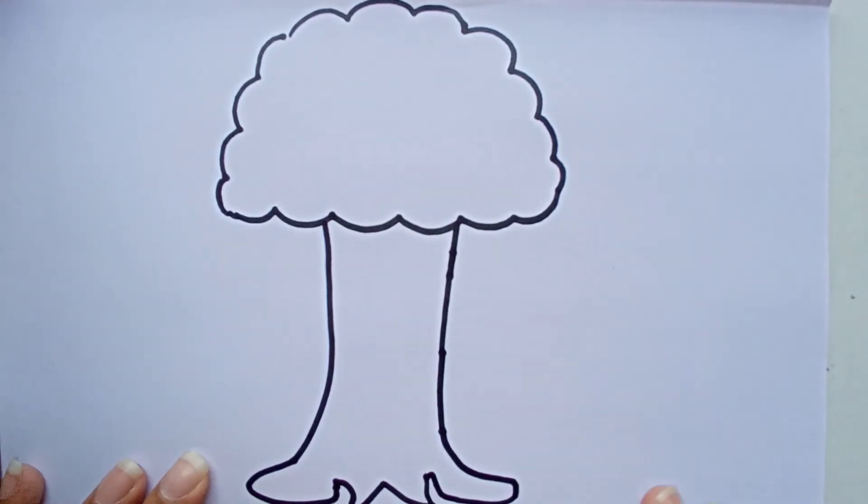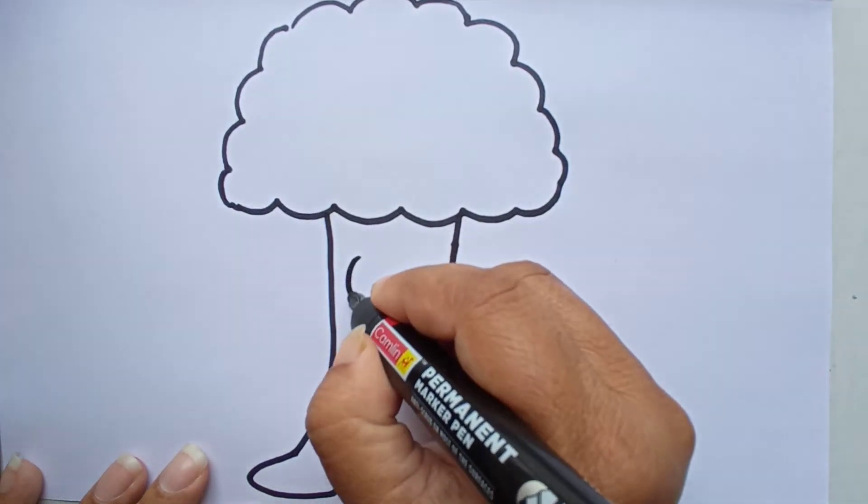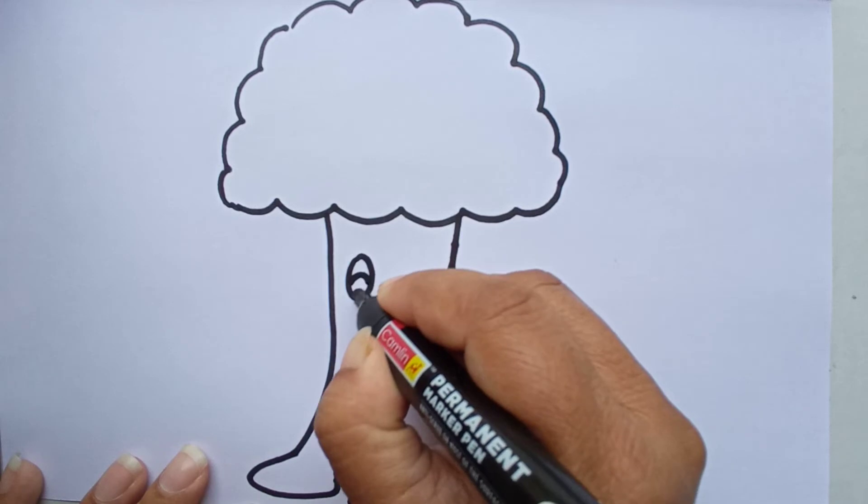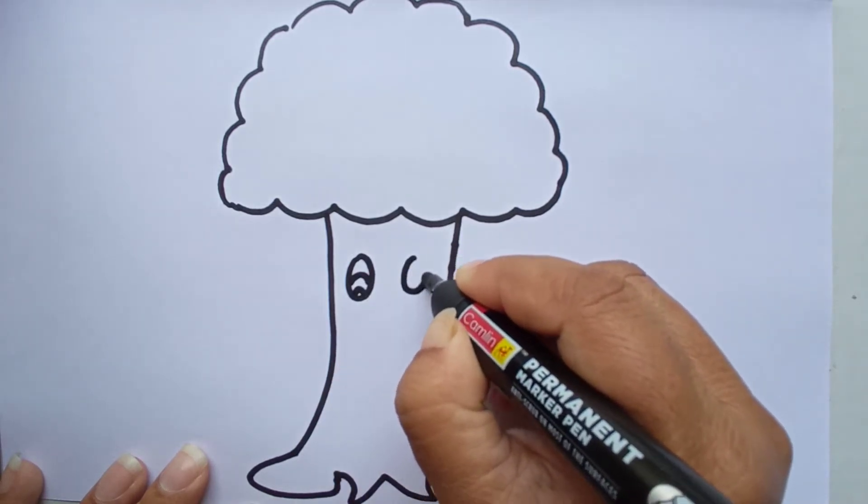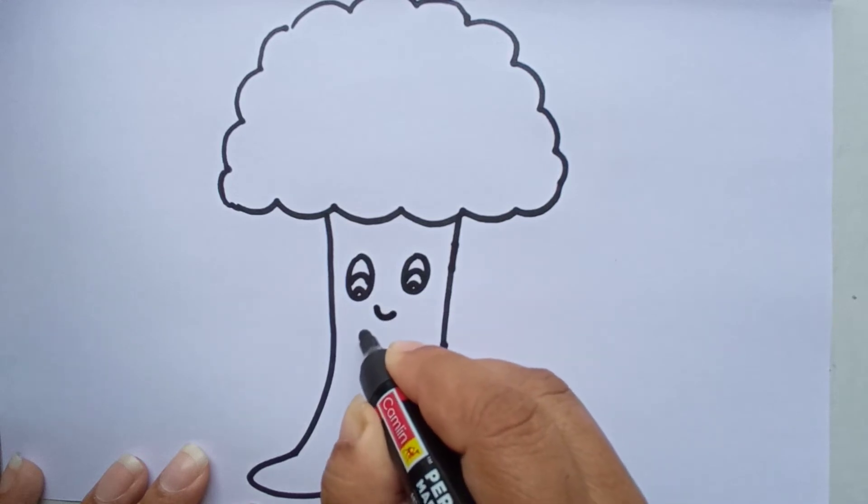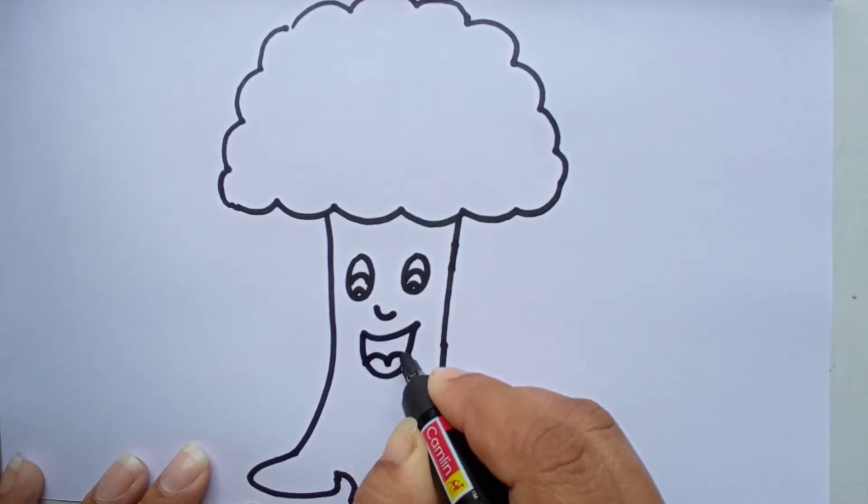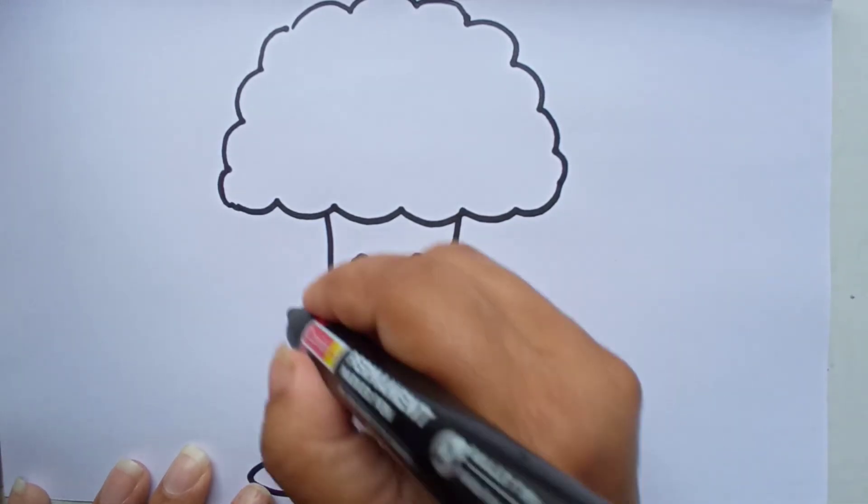So this is a tree, and the tree is also a living thing actually. So we can even make eyes, nose, and they even feel happy when you take care of them. So it's our responsibility to take care of the trees.